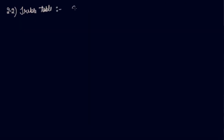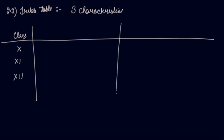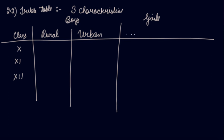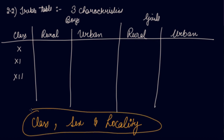The treble table is the table where three characteristics are shown. For example, class (10th, 11th, 12th), then number of students classified as boys or girls, and then further categorized by locality — rural area boys, urban area boys, rural area girls, urban area girls. So in this table, the students are classified on the basis of class, then on the basis of sex (boys or girls), and then on the basis of locality (rural or urban). These three characteristics make it a treble table.